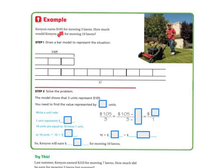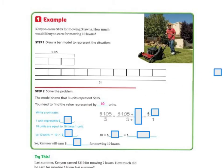Kenyon earns $105 for mowing three lawns. How much would Kenyon earn for mowing 10 lawns? You could draw a bar model showing 3 lawns totaling $105, then extend it to 10 lawns to find the unknown. The model shows that three units represents $105, and you need to find the value represented by 10 units. First we have to find the unit rate — one unit represents $35.